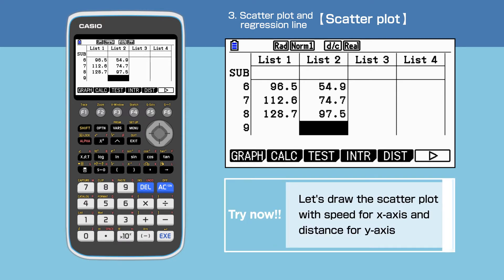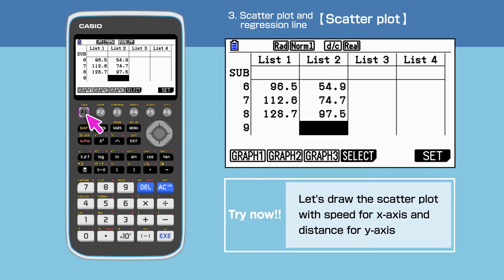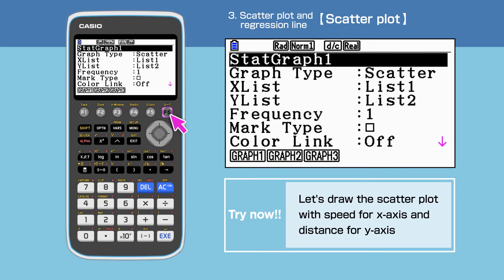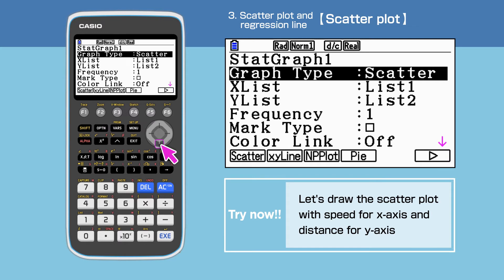We will draw the scatter plot with speed for x-axis and distance for y-axis. Press F1 to select Graph command, then F6 to set up. Press F1 to select Start Graph 1, then choose Graph Type Scatter.